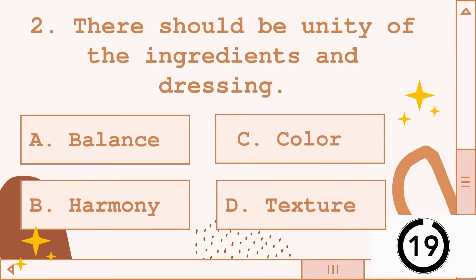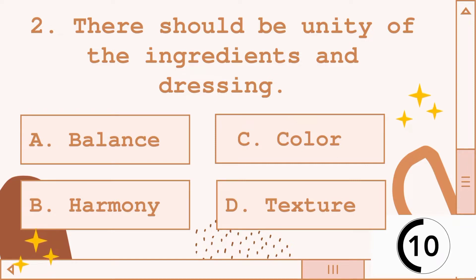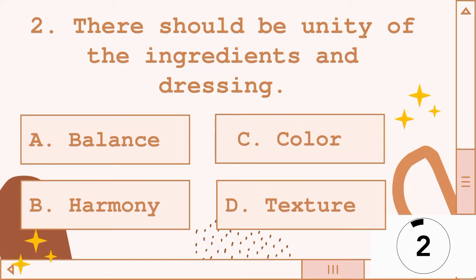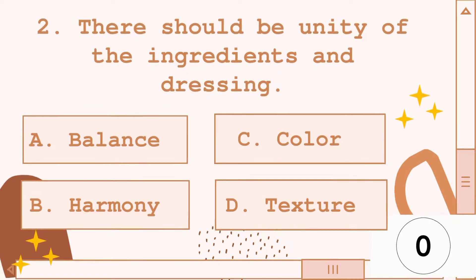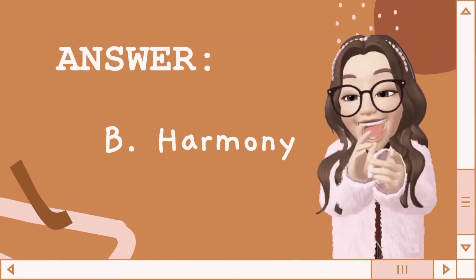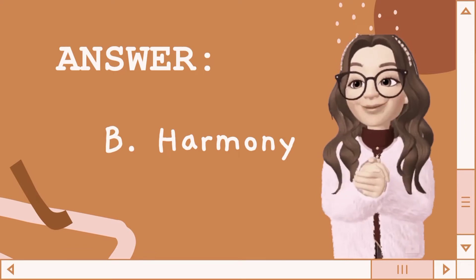Number 2. There should be unity of the ingredients and dressings. A. Balance, B. Harmony, C. Color, D. Texture. Answer: B. Harmony.